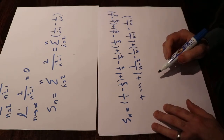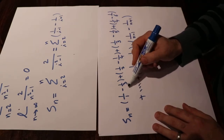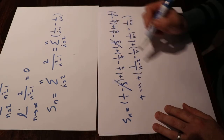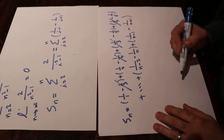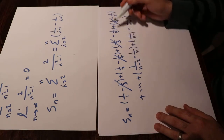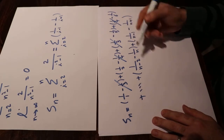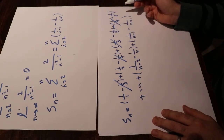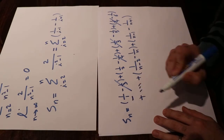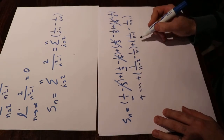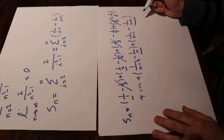If you look at this series you see that 1/3 is cancelled, 1/4 is cancelled, and if you expand further you will see that everything cancels out. The only remaining terms are the first term, the second term, 1/n, and 1/(n+1).